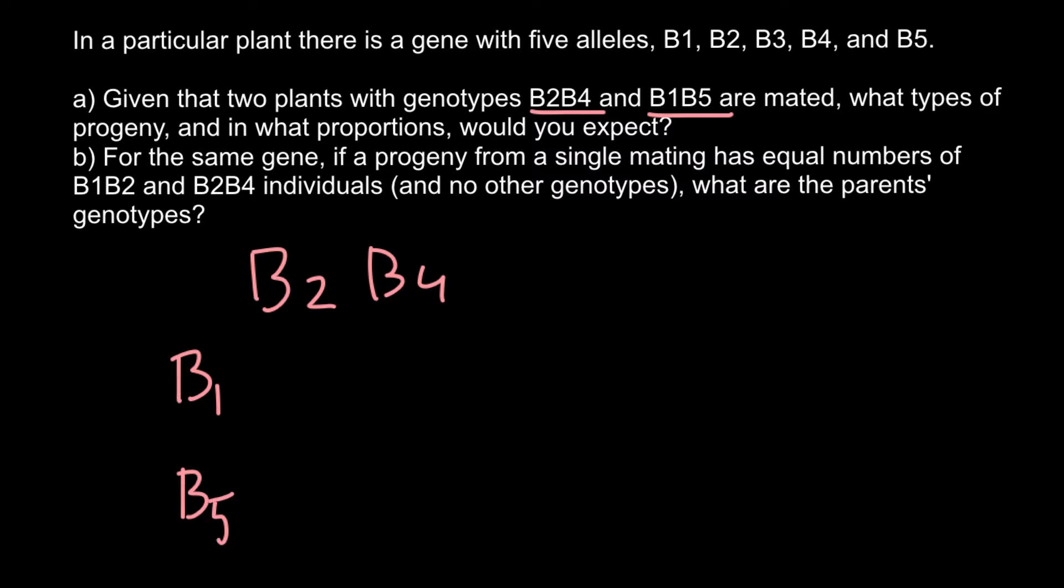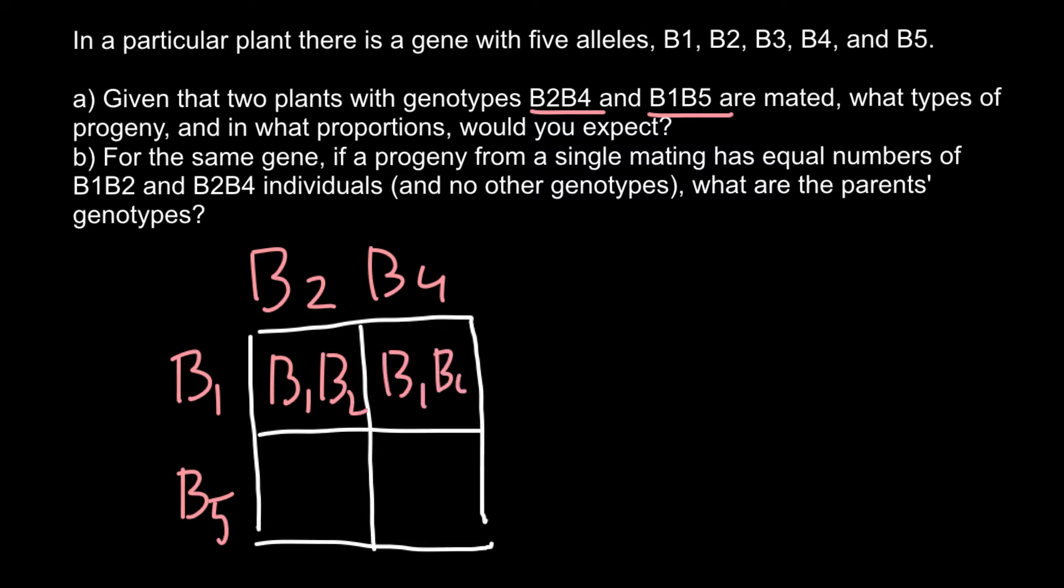Now let's do a cross. We use a simple Punnett square to find genotypes in the following generation. Here we would have B1B2, B1B4, B5B2, and B5B4.